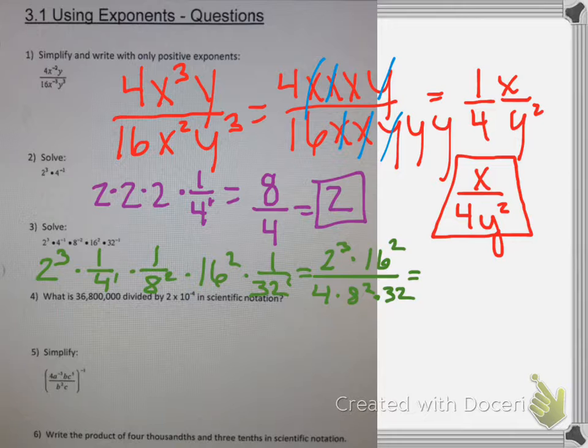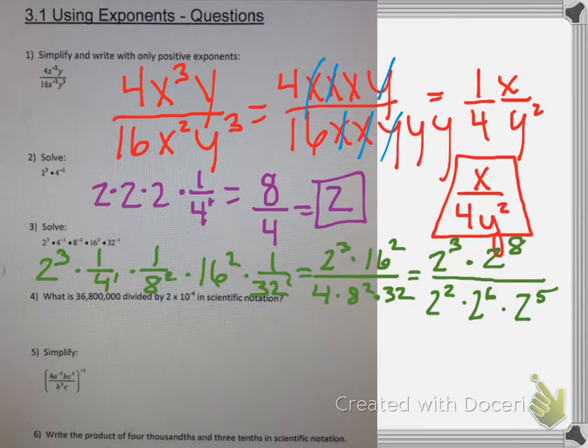So I get 2 cubed times 2 to the 8th, and then in the denominator, 4 is 2 squared, 8 squared is 2 to the 6th, and 32 is 2 to the 5th. Now if I have all of these written out that way, when I multiply exponents I add them up.